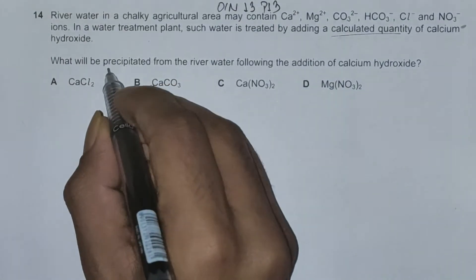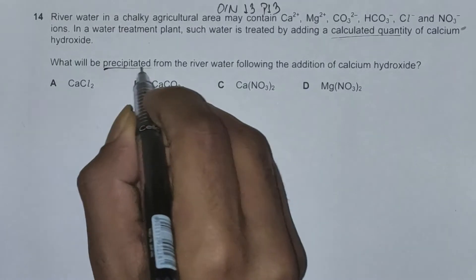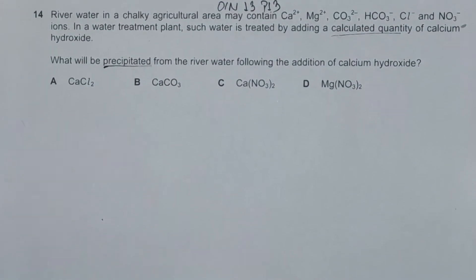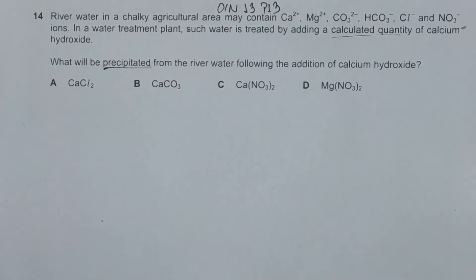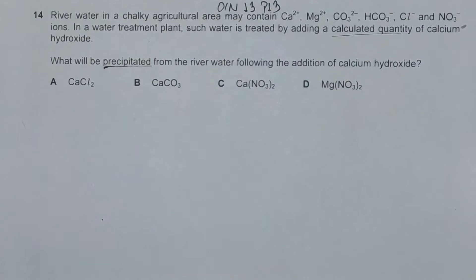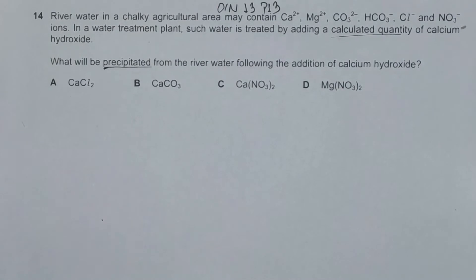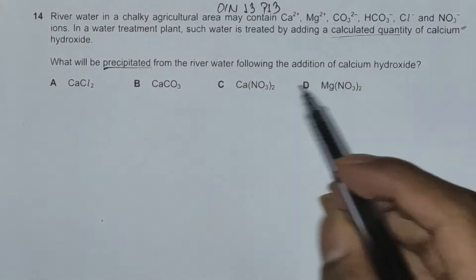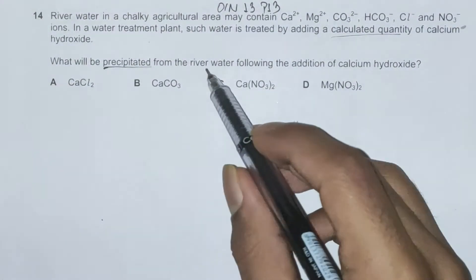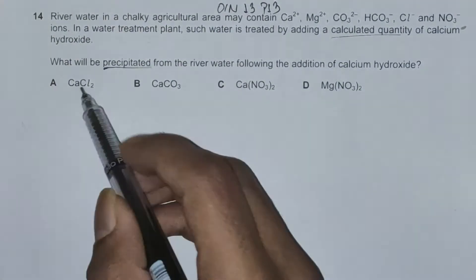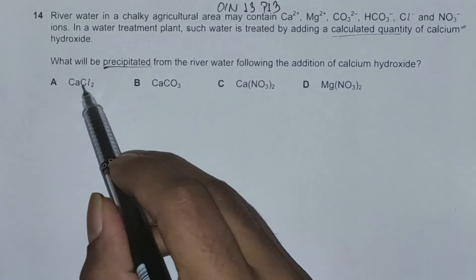The keyword to solve this question is 'precipitated,' because precipitation means we will form some solid particles. So we need to determine what will be precipitated from river water following the addition of calcium hydroxide.